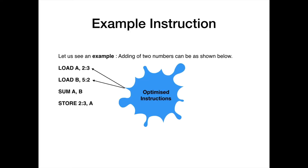As you can see in this example, RISC breaks a simple addition instruction task into four simpler and highly optimized steps. It loads the operand from the first memory address and stores it in register A, then loads the operand from the second memory address and stores it in register B, takes the sum of A and B, and then stores it into another memory location.